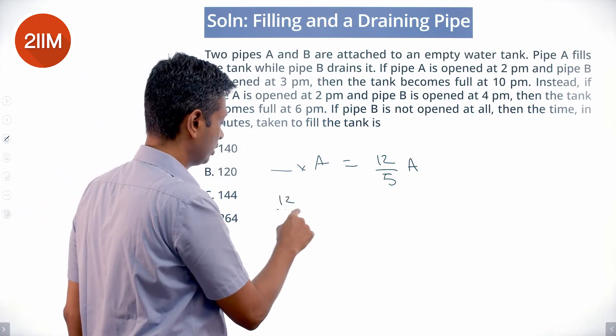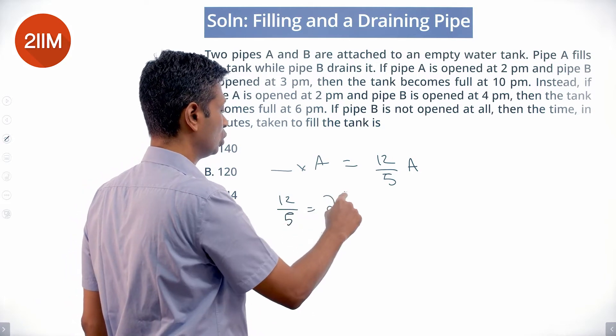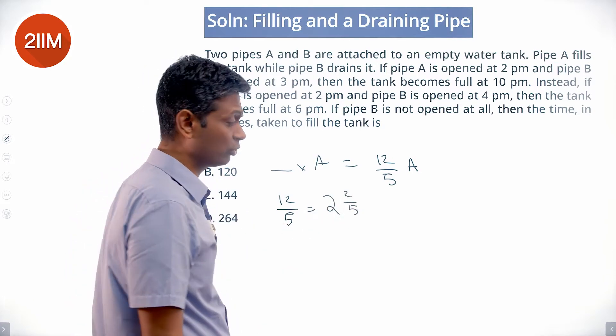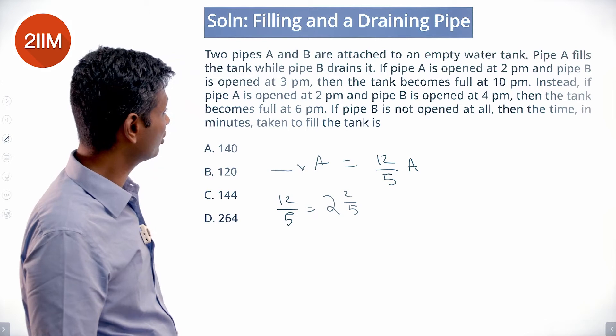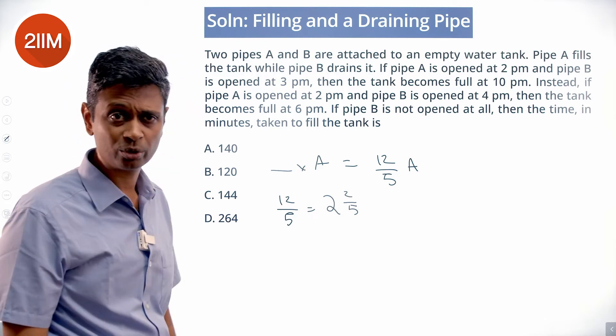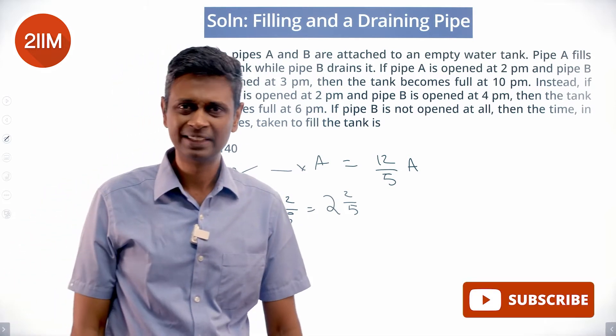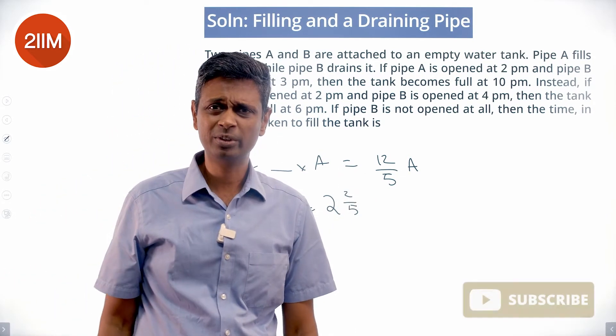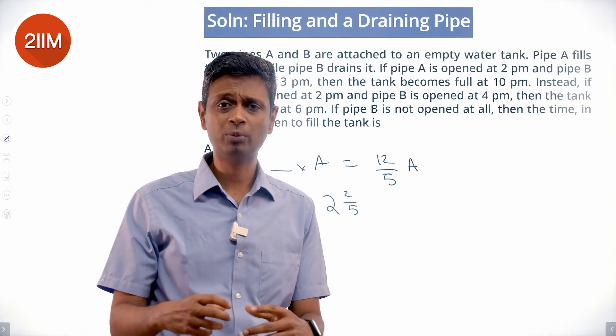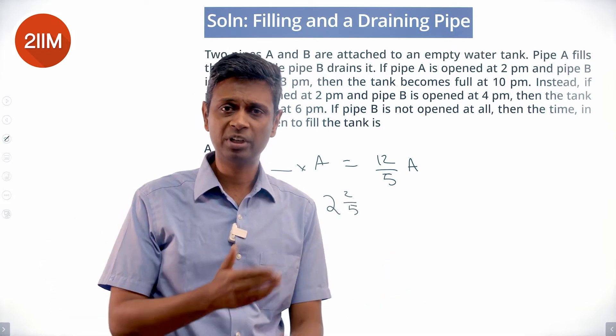This should be 12/5, which is 2.4 hours. 2 hours is 120 minutes, 0.4 hours is 24 minutes: 120 plus 24 equals 144 minutes. Nice and simple question. All these questions where there are two different time zones, one open one close, equate the two pipe scenarios and then we are through.